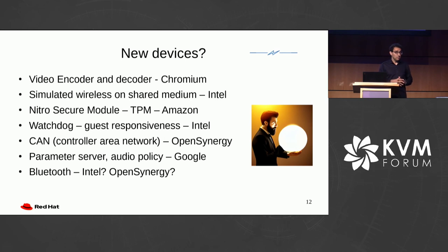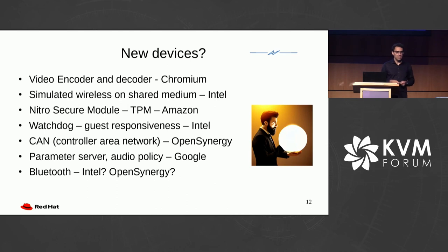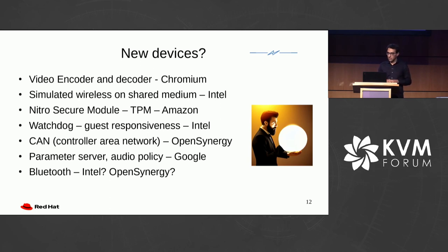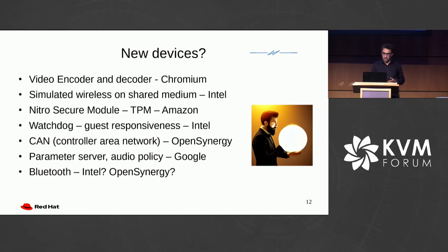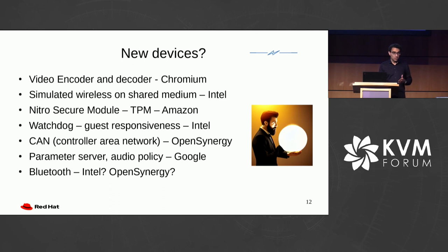Nitro Secure Module is a kind of TPM, proposed very recently. I hope it will make it — work by Amazon; I'm very happy Amazon joined the effort. Then we have a watchdog device that will detect whether the guest is responsive. Then we have automotive applications — a CAN bus controller, the bus used in a bunch of cars, work by OpenSynergy, who have been very active in the community. There are also parameter serving and audio policy devices proposed by Google — I don't know what they do, but when the spec lands I hope to find out. And finally, Bluetooth: the driver in Linux has been there for a while but is not well maintained, and we've been hearing 'real soon now' for a while. I hope we get it in 1.3.